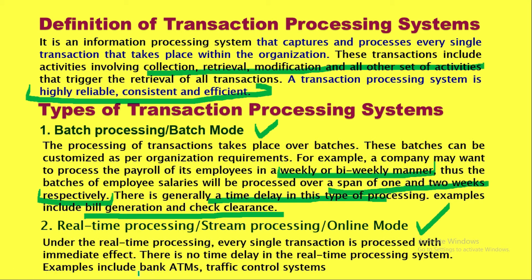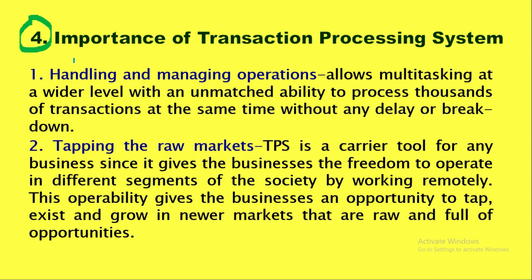The second type is real-time processing. The best example is your ATM machine, where transactions are done online instantly every day. We have thousands of transactions done through ATMs — automated teller machines. Traffic control systems are also an example of real-time processing, where a single transaction is processed immediately with instant effect. There is no delay — as soon as you insert your debit card, you can get your money instantly. So if you want work done instantly, real-time processing is better; if you can afford a delay, batch processing is an option.